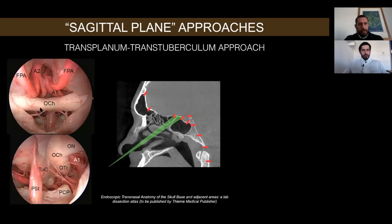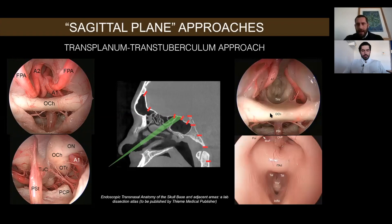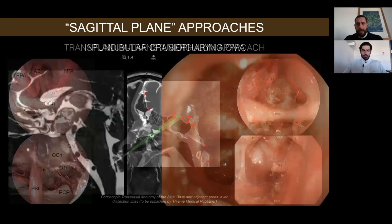Further magnification shows the optic chiasm, the medial orbital frontal artery, the anterior cerebral artery A1 and A2, the optic tract, the optic chiasm, optic nerve, and pituitary stalk. If you go above the chiasm, you can reach the third ventricle and navigate inside it. You can see the thalamus, the interthalamic adhesion, the foramen of Monro, and the access to the third ventricle.